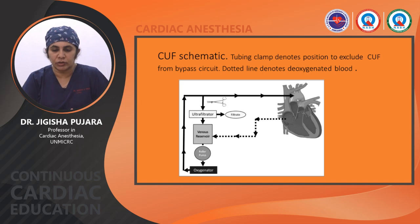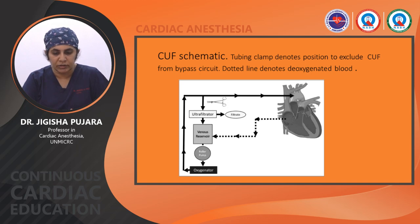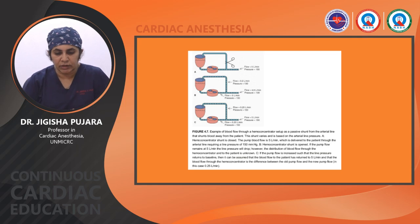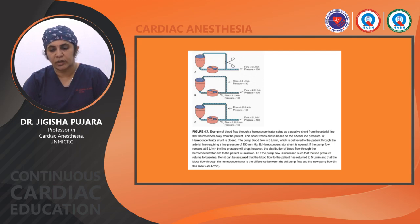This limitation necessitates intermittent use of CUF, slows the rate of volume removal, and requires additional fluid to the CPB circuit, which can be counterproductive. The schematic diagram shows: tubing clamp position to exclude the CUF from the bypass circuit, dotted line denotes deoxygenated blood. Blood from the venous reservoir passes through the roller pump and oxygenator; when ultrafiltration is used, the clamp opens and blood passes through the ultrafiltrator. To maintain continuous volume, fluid must be added up to baseline pressure so that the filter does not cause hypovolemia.